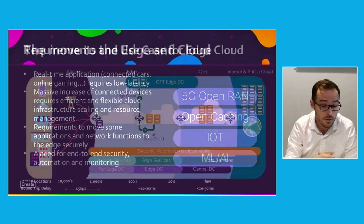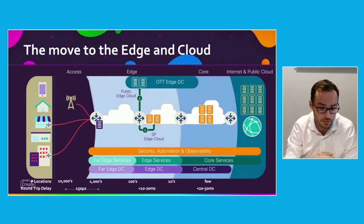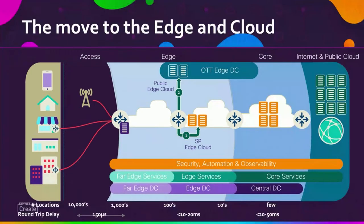The Edge is not just dynamic, it is hybrid as well. Applications would be running either on the Service Provider's Edge Cloud or on any public Edge Cloud. Currently, apps are running in the central data center. We will see some of them moved either to the Edge — the Service Provider's Edge premises — or to any Edge Cloud, depending on the use case requirements.